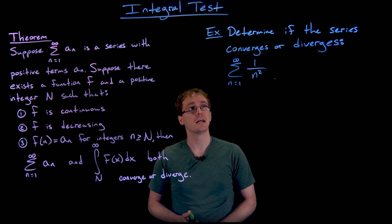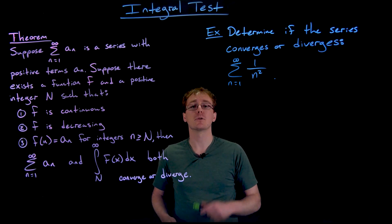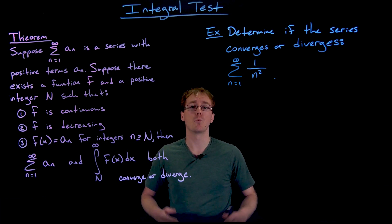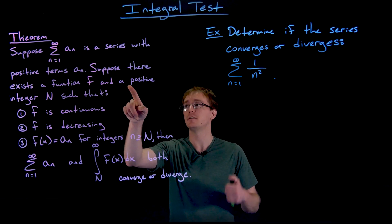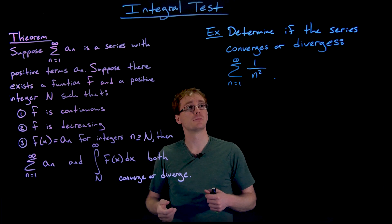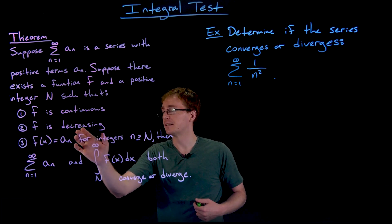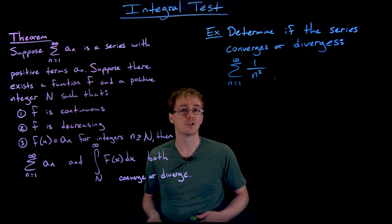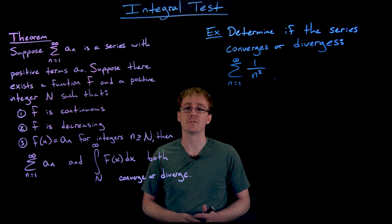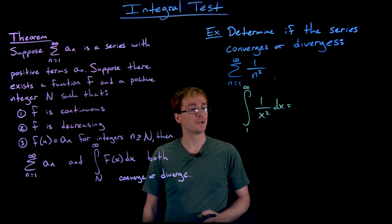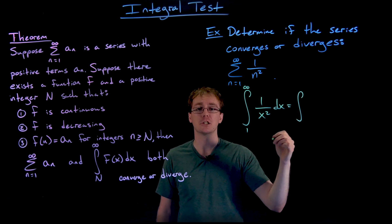I have another example for us to use the integral test for. In this example, we're trying to still determine if the series converges or diverges, but now we're looking at the series that is the sum from n equals 1 to infinity of 1 over n squared. So really quickly, are the terms in our series all positive? Yes, they are. Our function that describes the terms in our series, that is 1 over n squared or 1 over x squared, is also positive. It's certainly a continuous function, it's a decreasing function, and it's describing the terms in our series. So we're all set up and ready to use the integral test. So we have to compute the improper integral from 1 to infinity of 1 over x squared, to see if we're going to have a convergent or divergent series.